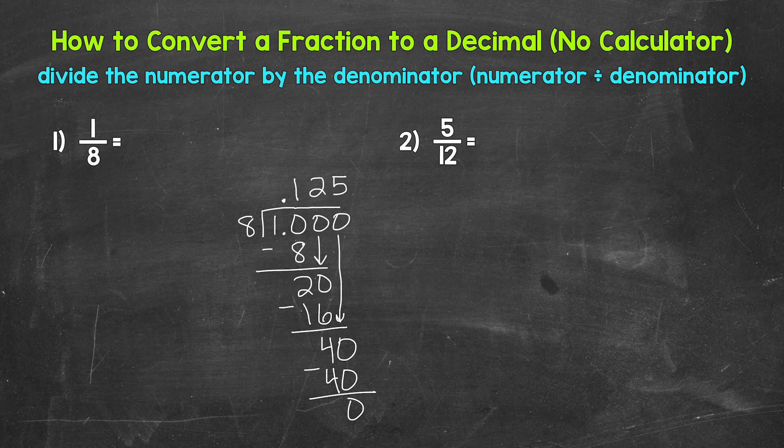We get 0.125, 125 thousandths. One-eighth equals 0.125, so 125 thousandths. Now, you'll notice when I rewrote that decimal, I started with a zero, and then the decimal. This is common when writing decimals because it helps us recognize and see the decimal. We don't want the decimal to get overlooked.